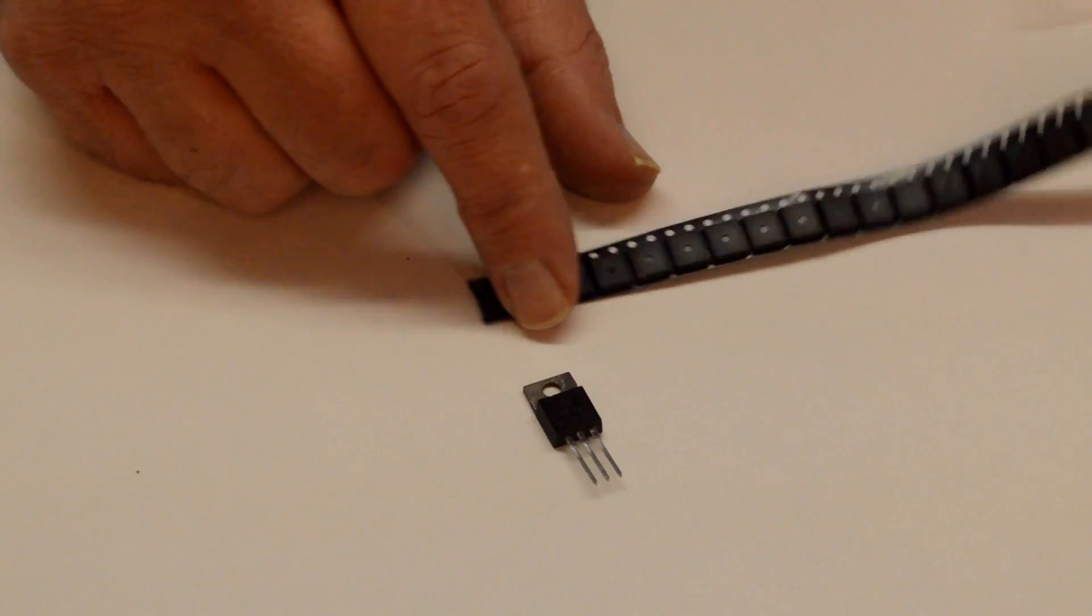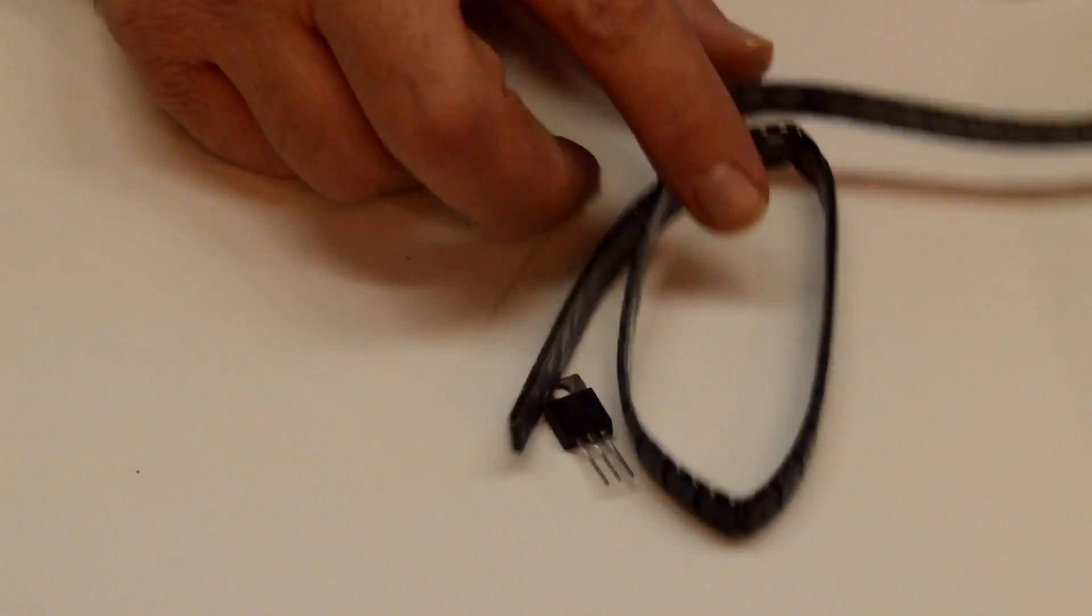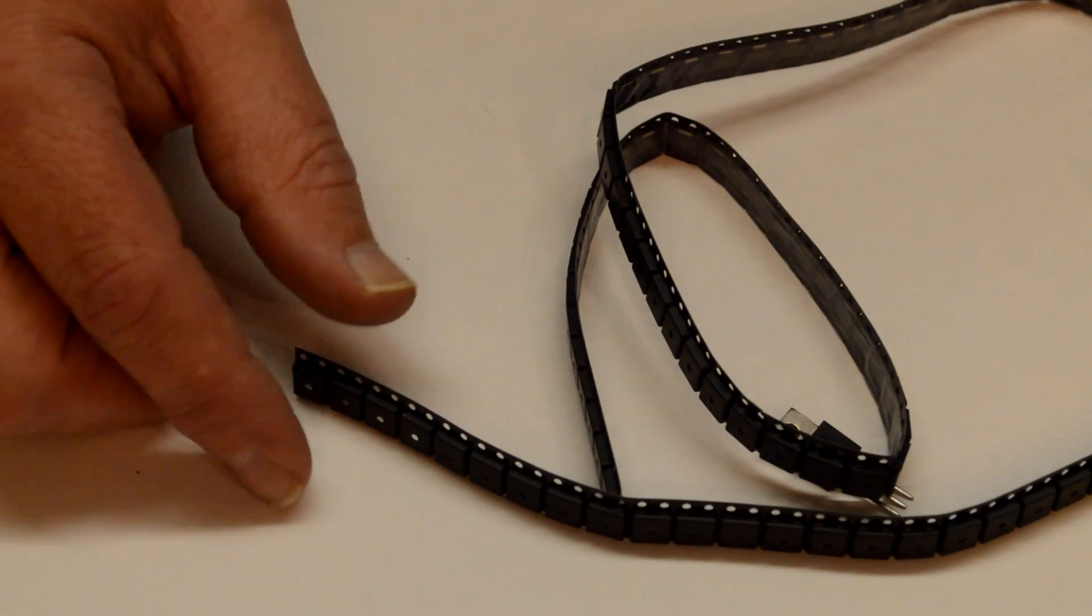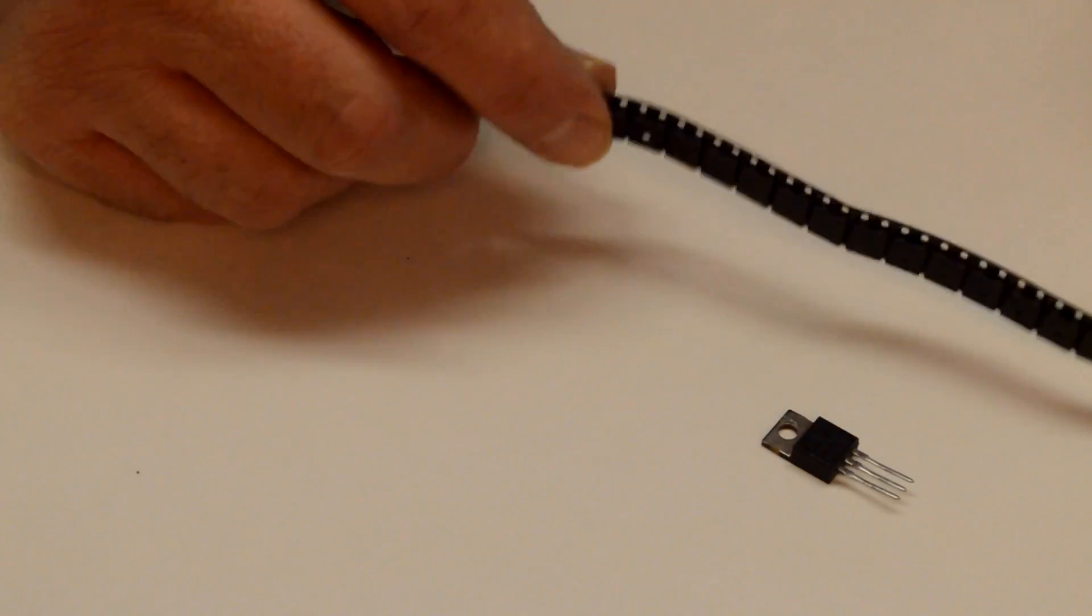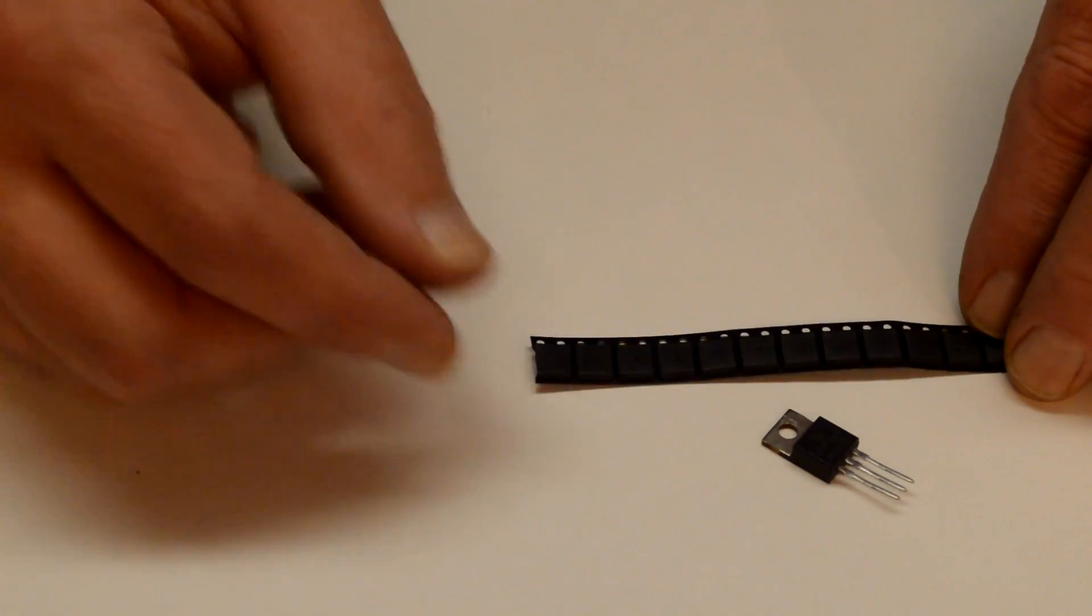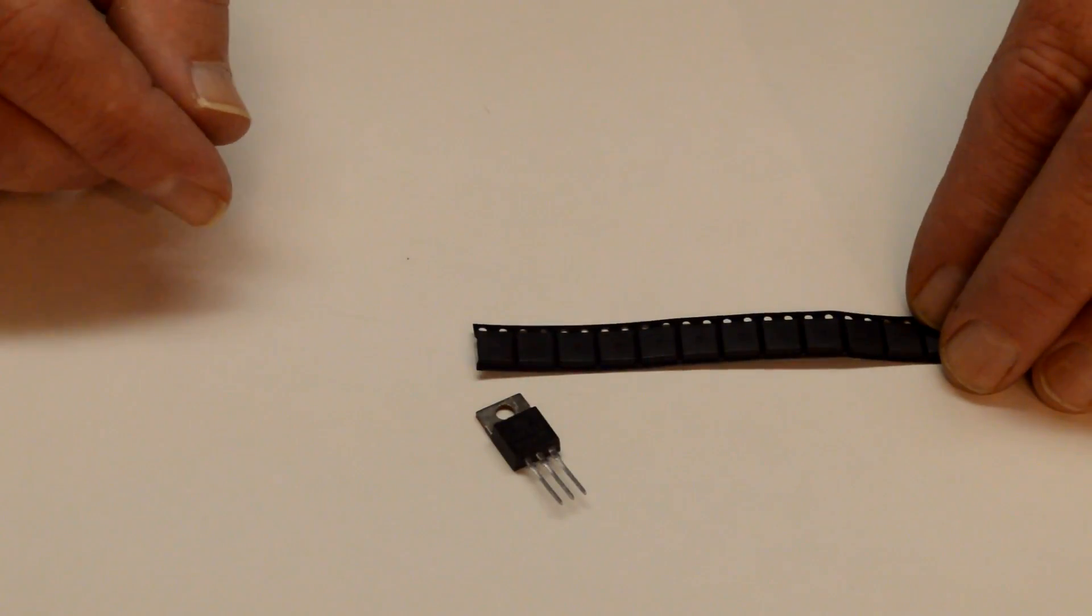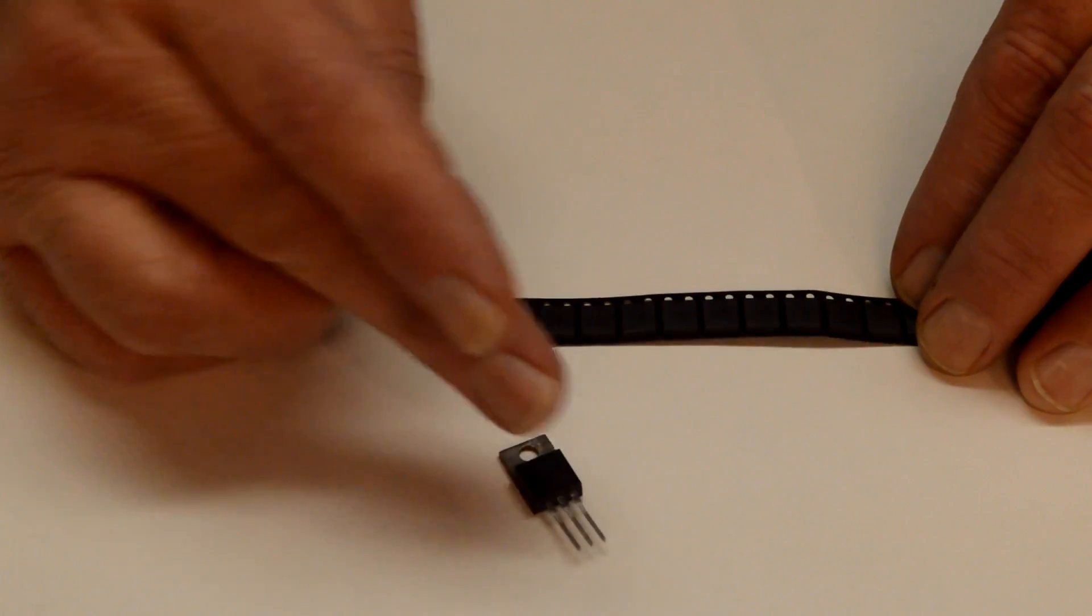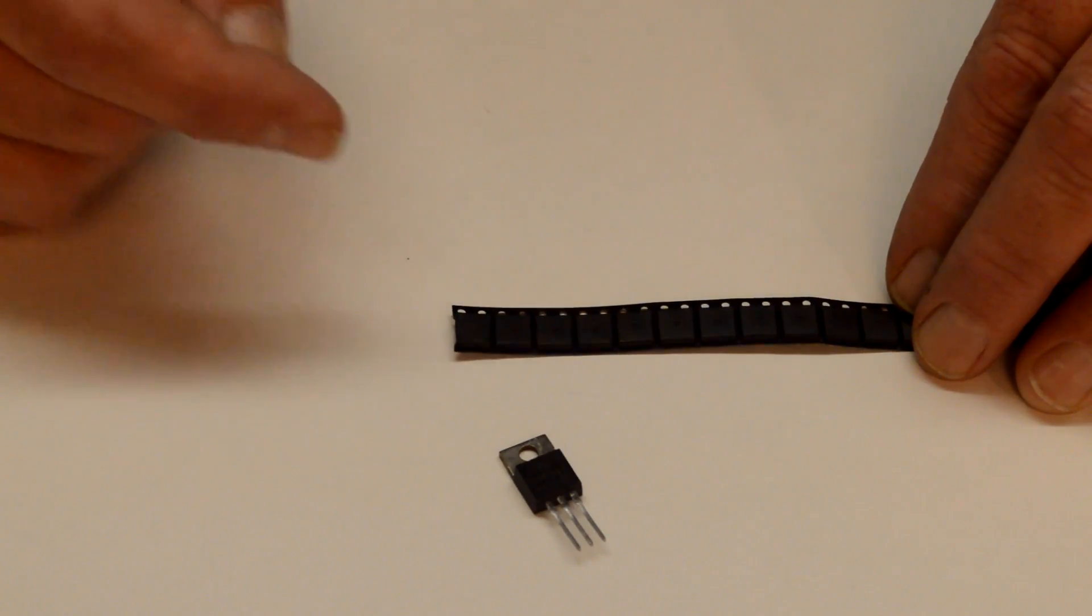But really this whole strip only costs less than 10 bucks and I probably have 50 to 75 voltage regulators here. So the cost is very little and they're very handy for other projects. So anyway now that you've seen the voltage regulators and the styles and sizes, let's go ahead and start putting this thing together.